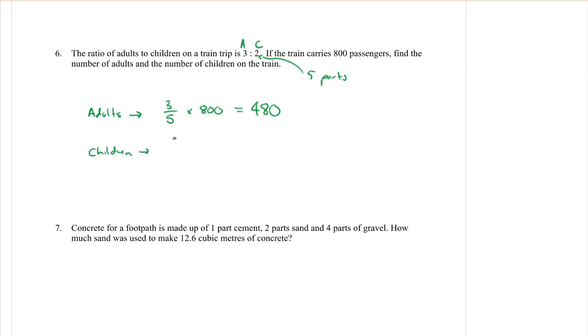Then we do the children. So in our ratio there is 2 for the children, we put that over the total which is 5, and then we times that by 800. Good job. So there are 480 adults and 320 children. If you're wanting to double check, you add those two numbers together and make sure that that totals 800, which it does.